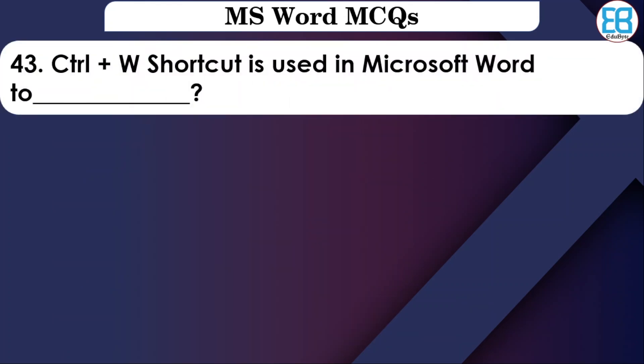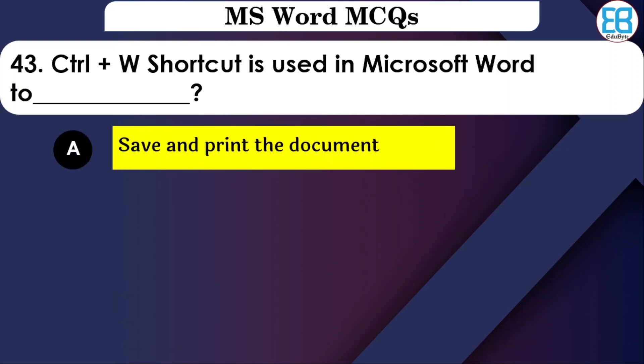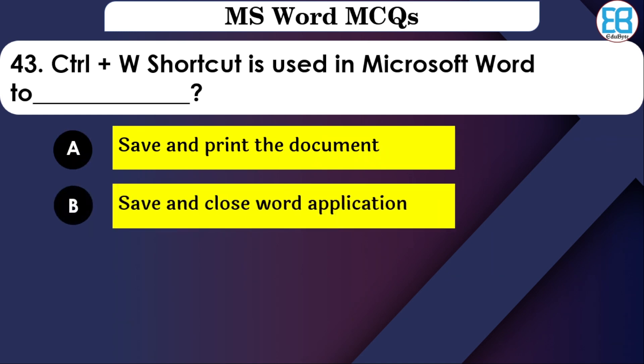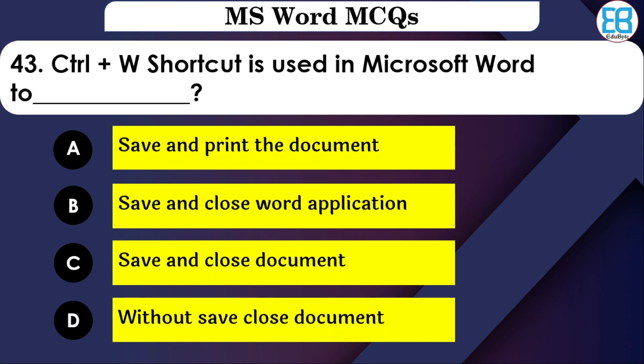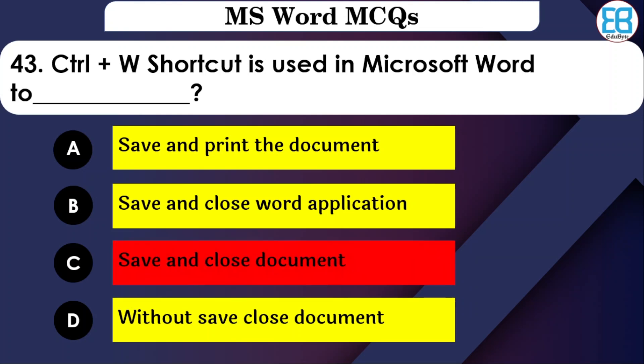What is Ctrl+W used for in MS Word? The options are: Save and Print, Save and Close Word, Save and Close the Document, or Close without Save. The correct option is Save and Close the document — Ctrl+W saves and closes the document.